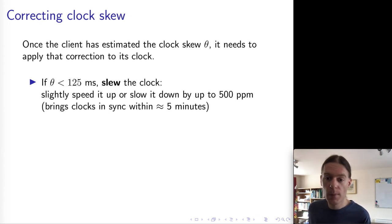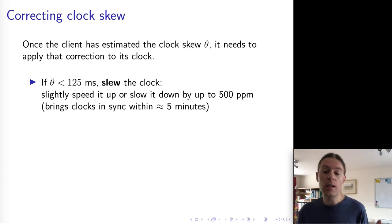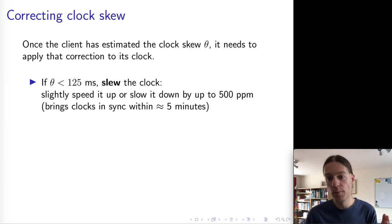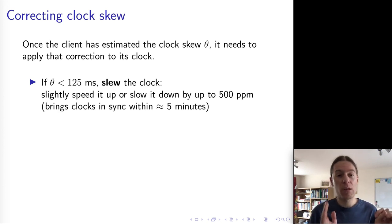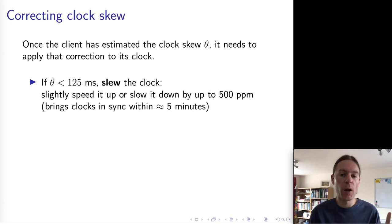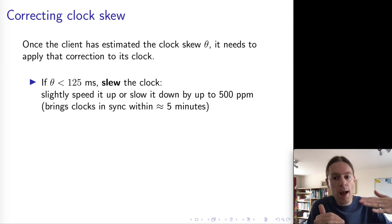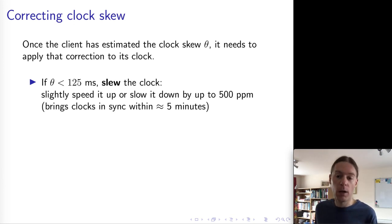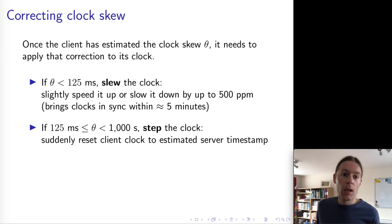Now that we have the skew between the two clocks, the client can correct its own clock to bring it in sync with the server. What the client does depends on how big the clock skew is. If theta is less than 125 milliseconds, the client will slightly speed up or slow down its clock as necessary — adjusting its clock rate by at most 500 ppm (half a millisecond per second). Over the course of a couple of minutes the client clock and server clock will drift together and converge. This is called slewing the clock.